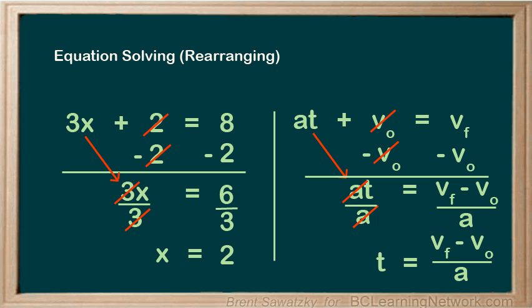So our final answer of t equals vf minus v0 over a is not quite as pretty as finishing with one single number, but it's much more useful, as you'll learn later.